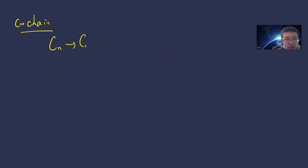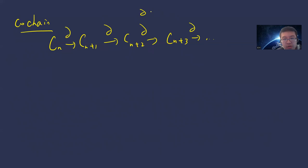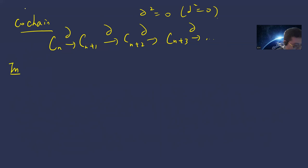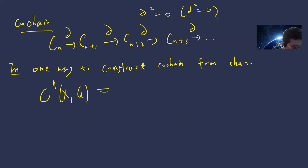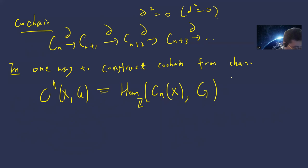A cochain complex has modules with increasing indices, boundary maps, and still satisfies d² = 0. One way to construct a cochain from a chain is using Hom: define Cⁿ(X; G) to be the group of homomorphisms from Cₙ(X) to some abelian group G.